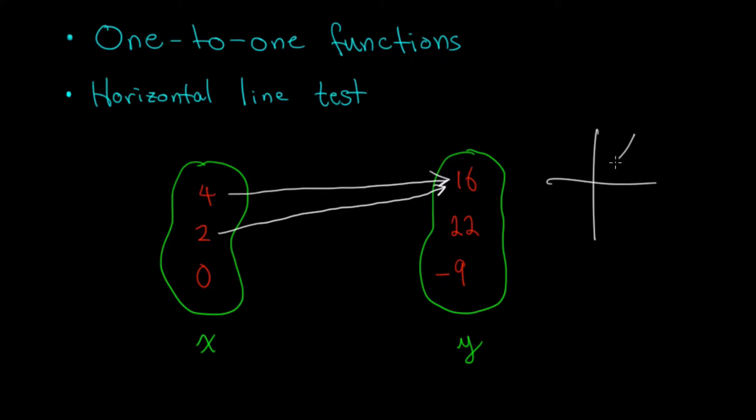Think of the graph of y equals x squared, for example. When x equals 1, y equals 1. When x equals negative 1, y equals 1 again. Different inputs, same output value. That is perfectly okay within a function.